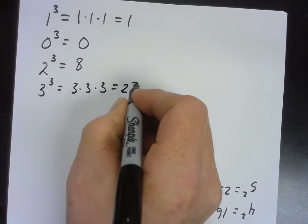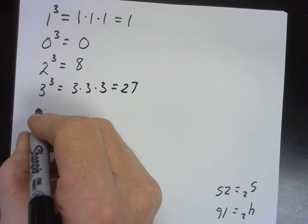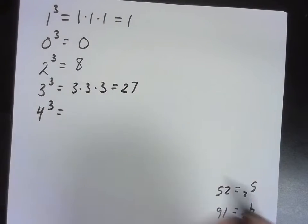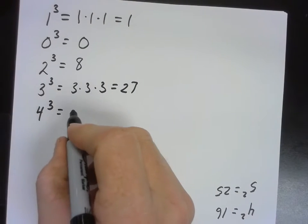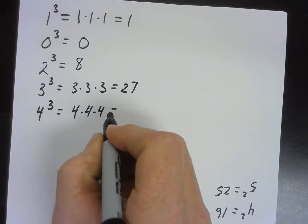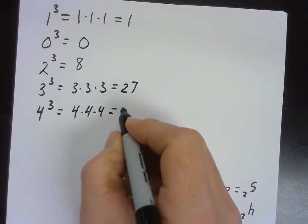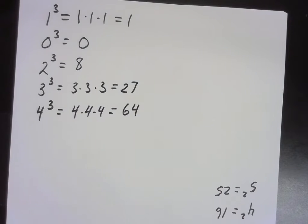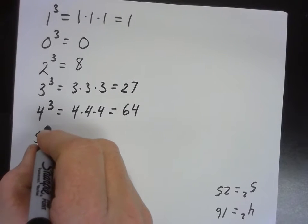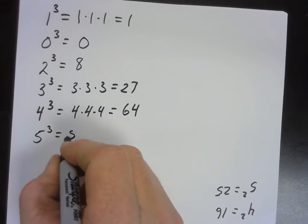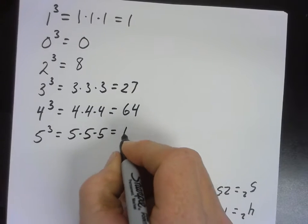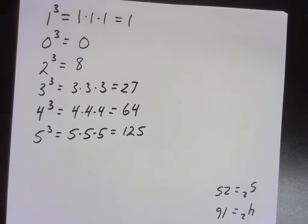Four to the third power — 4 times 4 is 16 times 4 is 64. Five to the third power is easier: 125. Five times 5 is 25, and if you have five more quarters that's a dollar 25 — 125.